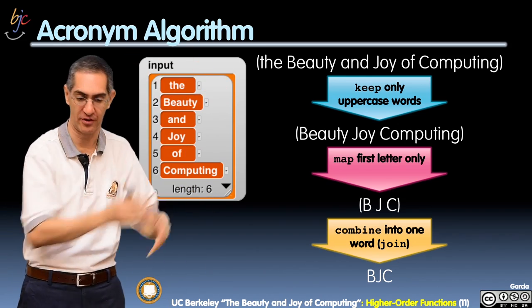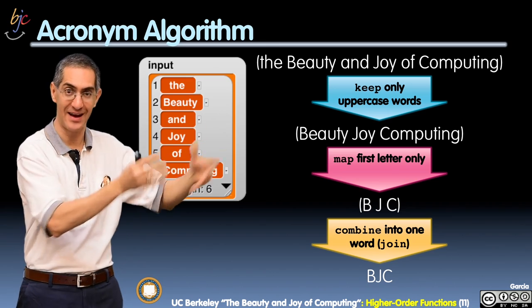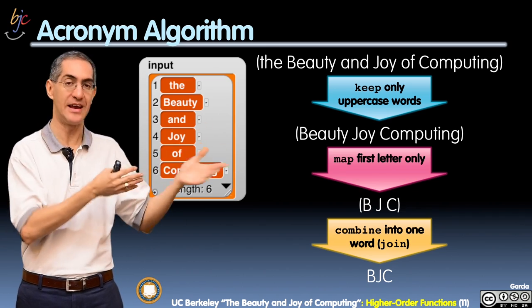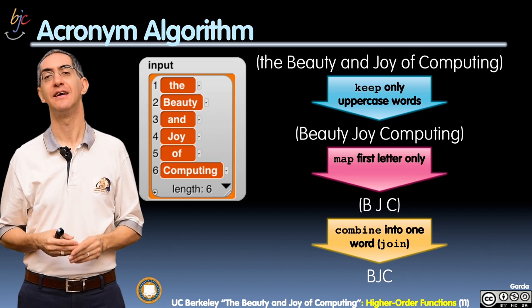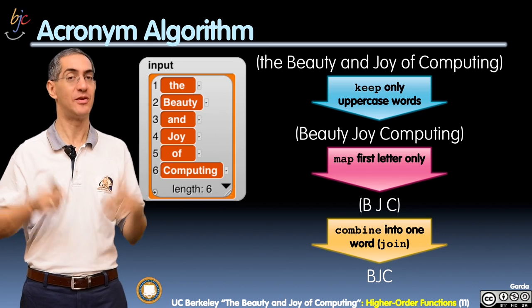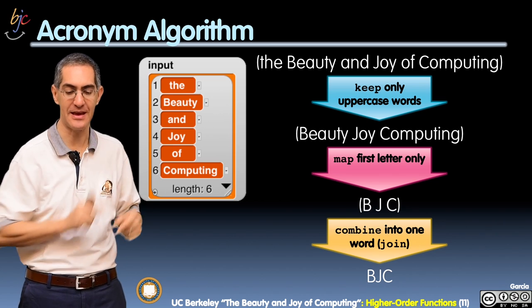So now the data flows into the next filter which is a mapper. The mapping step is the next stage in my processing of the data. I'm going to now ask for the first letter of each of these words, which gives me a list of three elements: B, J, C.